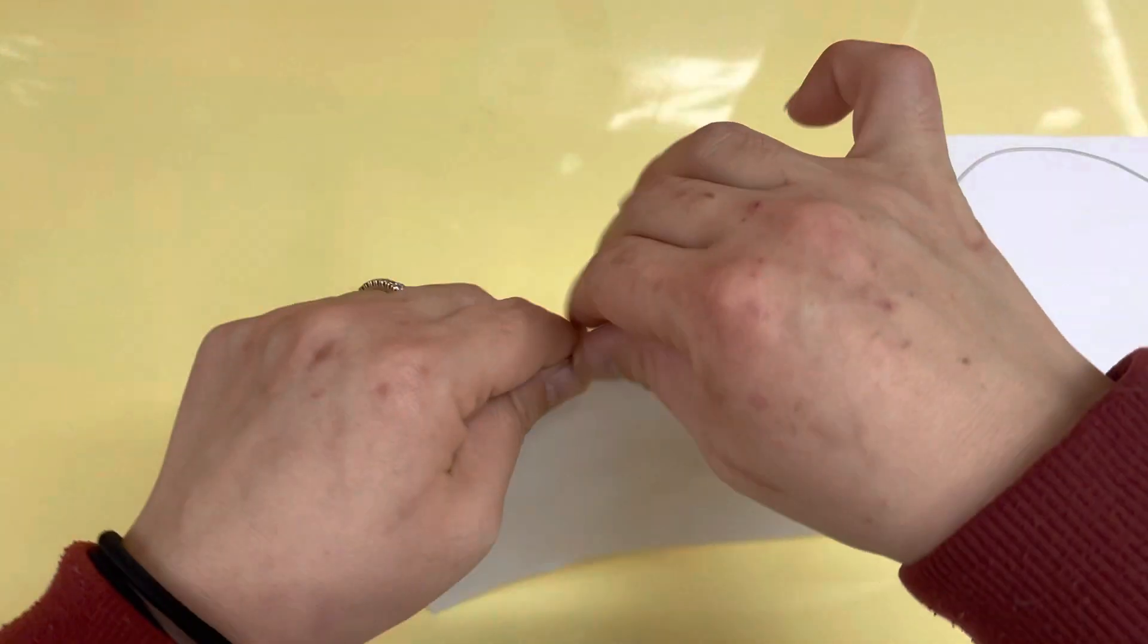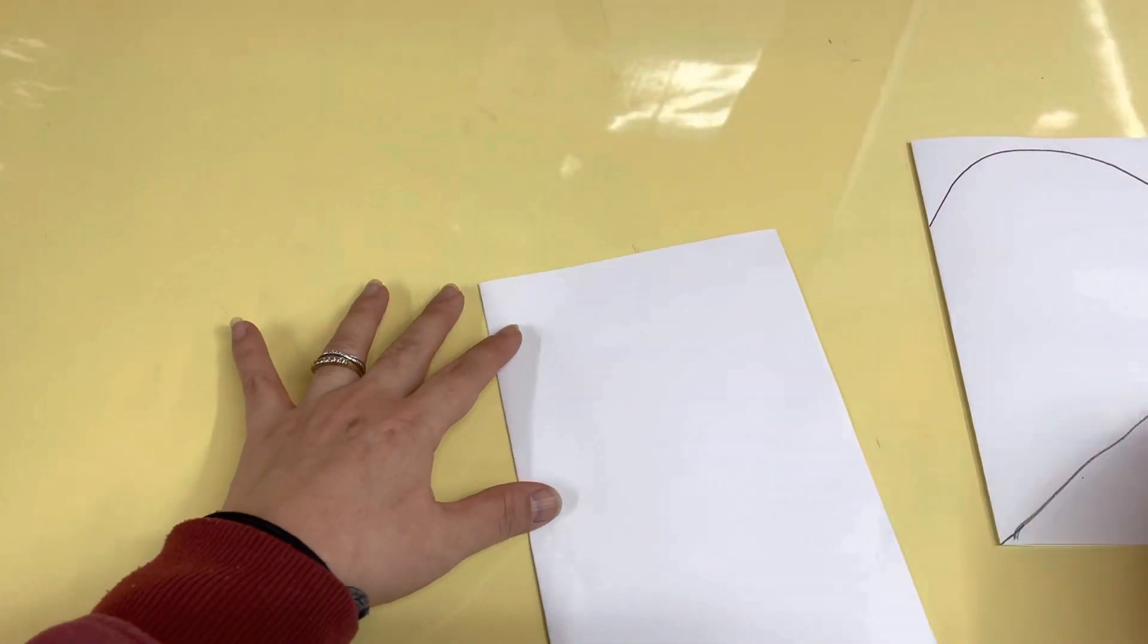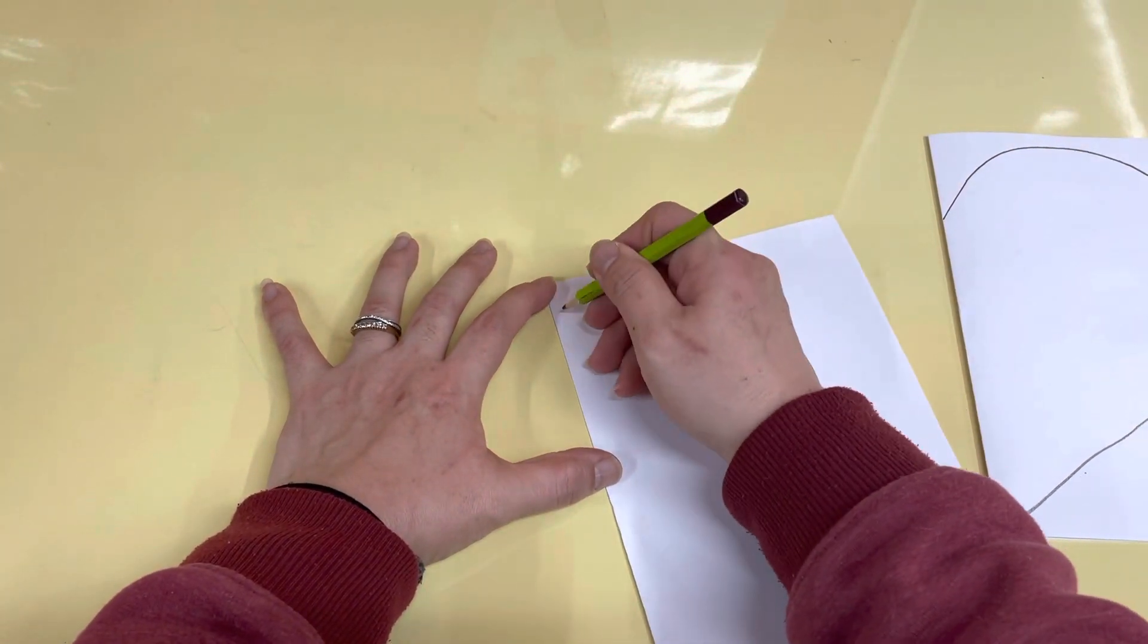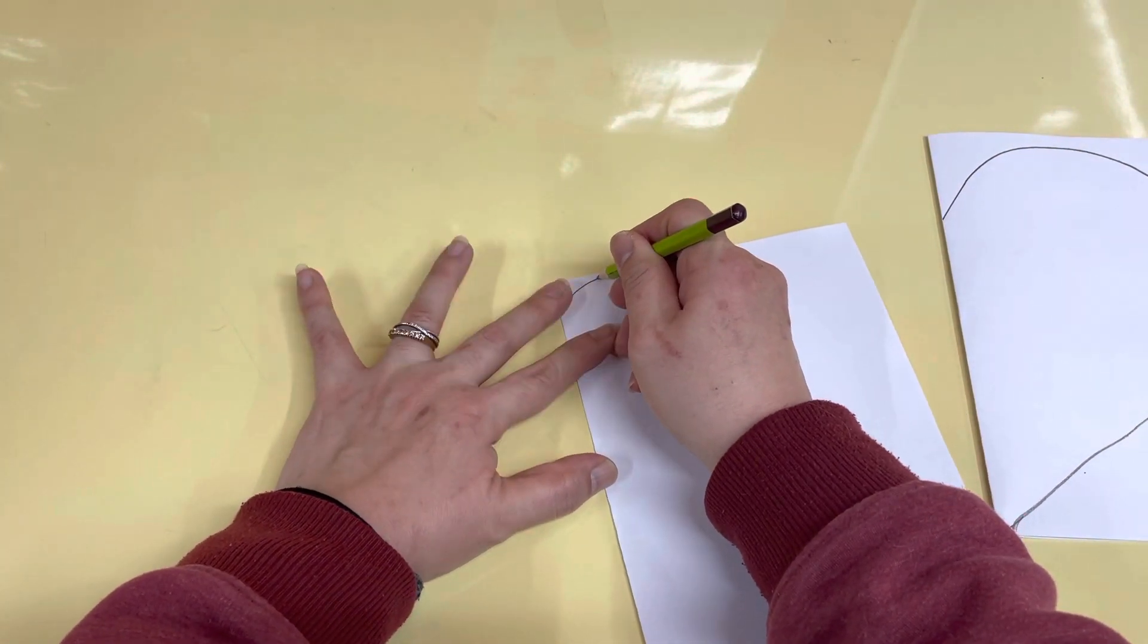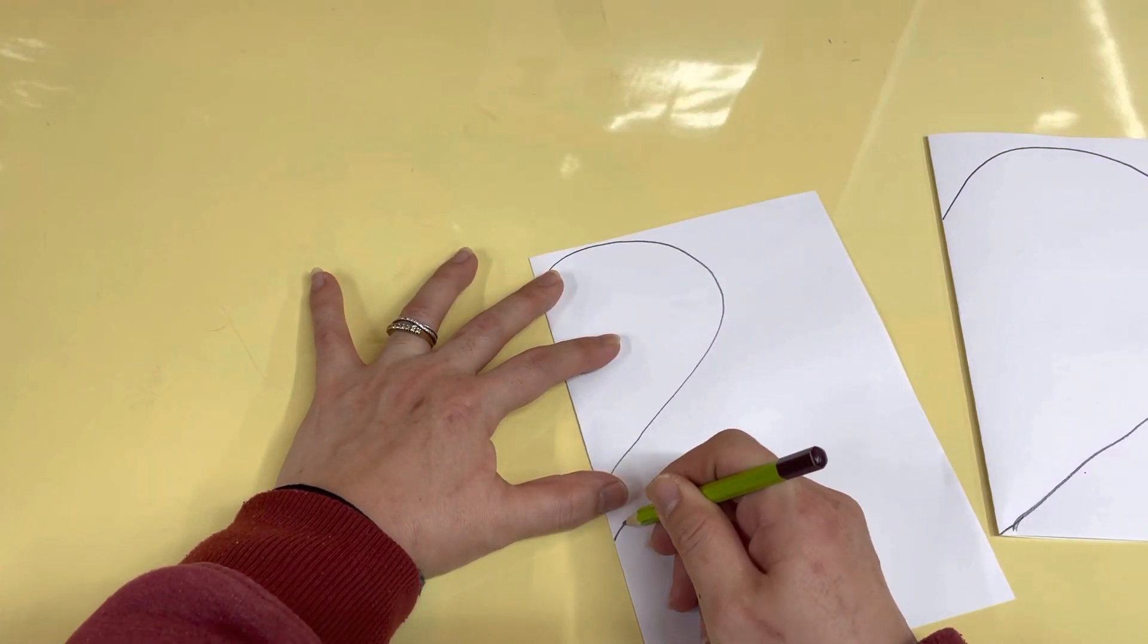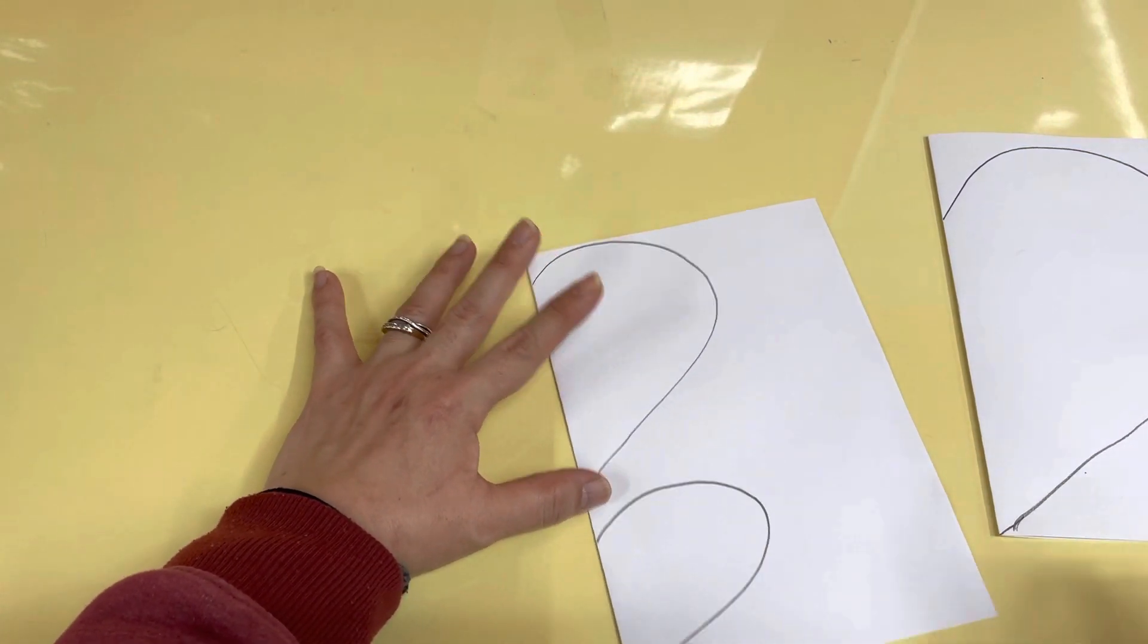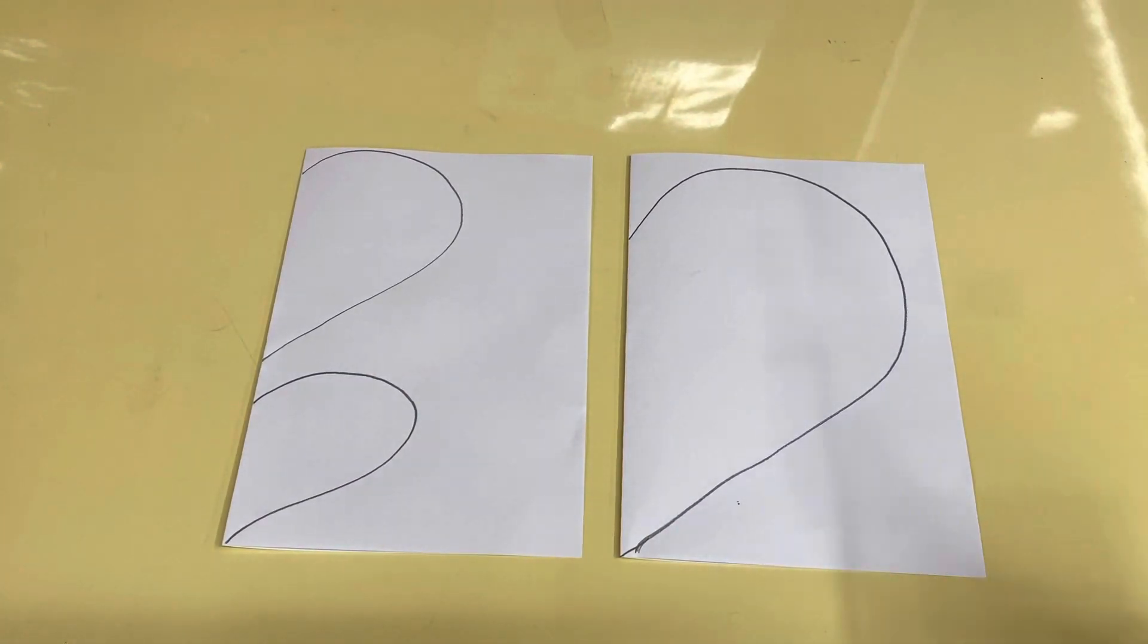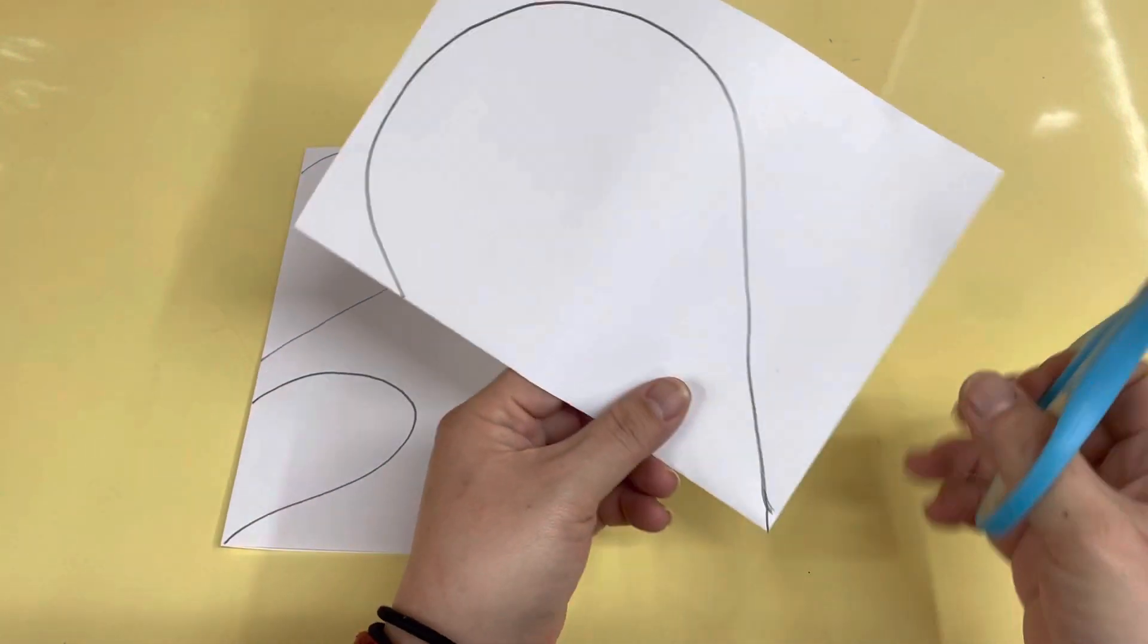Okay, fold this and then draw smaller half hearts. Okay, so here and here. Okay, so now you have these, look at that. Now we cut, cut, cut.